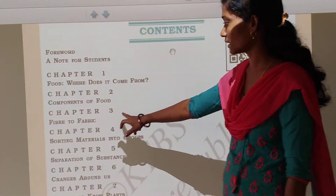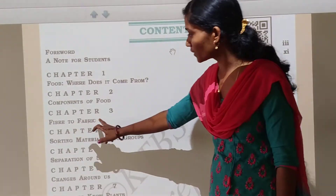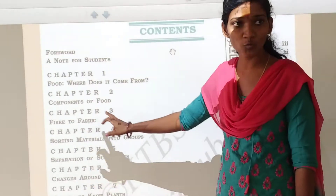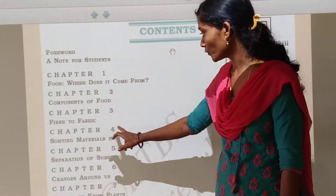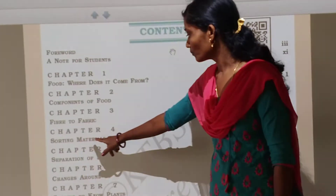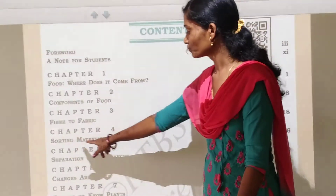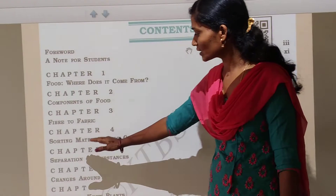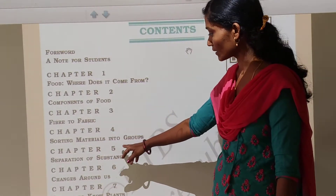Chapter number 3: Fiber to fabric. In this chapter we study about cotton, silk, wool and fabrics. Next, chapter number 4: Sorting materials into groups. In this chapter we study about the properties of materials and hardness.